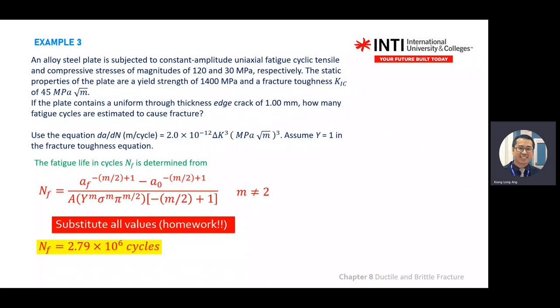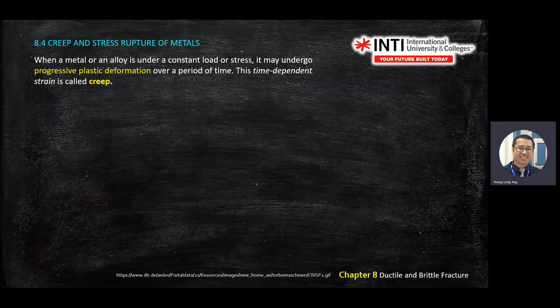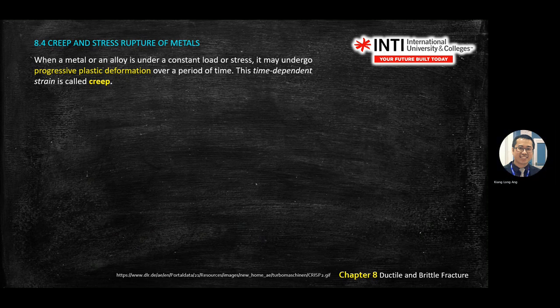Before the break we stopped at example three, so we have a few more slides then we conclude chapter eight for this module. Next we look at creep. Creep is when you have a metal that is under constant load over a period of time, and the time-dependent strain is called creep.